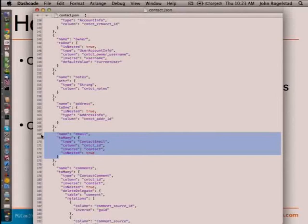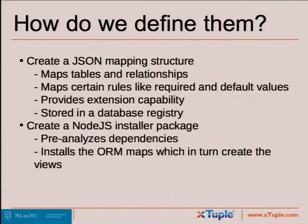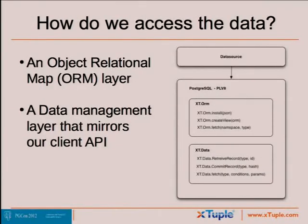When you load these JSON definitions through our function calls, it actually creates the views. We've created a whole set of functions in a class called XT.ORM where I can install those JSON files, which creates the views and provides a fetch function to inspect the properties of an object-relational map. I've got a data layer that mirrors the client API I was talking about, so I can make requests to retrieve a record, commit a record, and fetch — just like the client asked for. Node just passes these things through to Postgres.